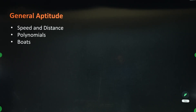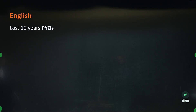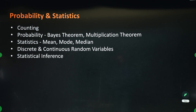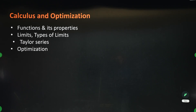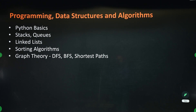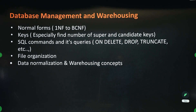This is for general aptitude — you can just pause the video and go through them. This is for English — for English you have to just do previous 10 years' question papers. This is for probability and statistics — just pause it and read it. This is about linear algebra — just pause it and read it. This is about calculus — just pause it and read it.